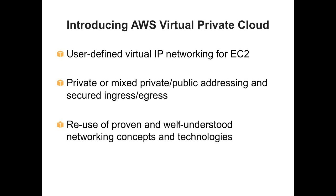AWS Virtual Private Cloud allows you to have your own user-defined virtual IP networking for EC2. You can actually use your entire own internal addressing space. You can create your own routing tables, your own DHCP rules, and you can mix private and public addressing. Another great benefit of VPC is you are able to define secured ingress and egress rules, and you can reuse a lot of well-known networking concepts. This is the product that customers use whenever they want to extend their data center to us.